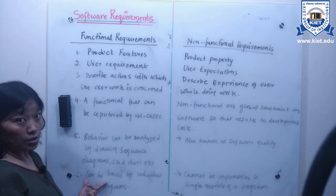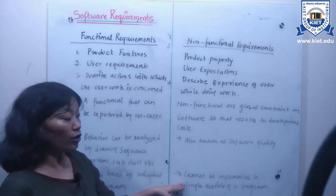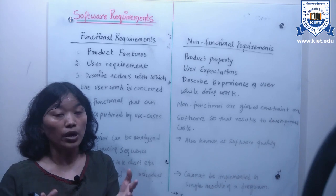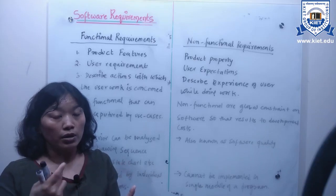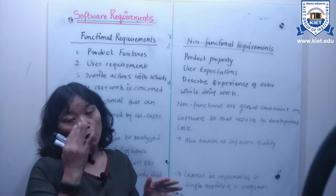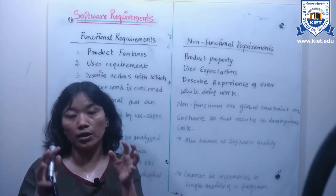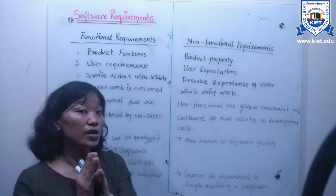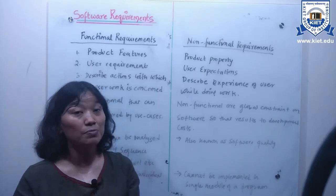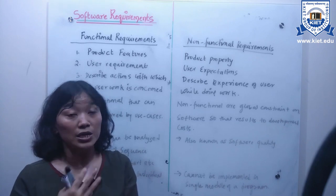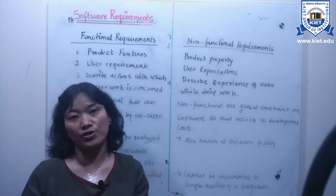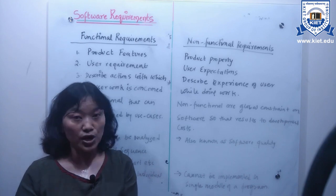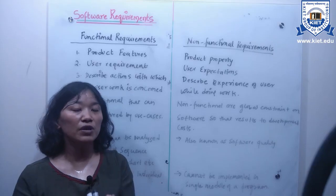Functional requirements can be easily traced by an individual set of programs or a single component or module to check whether it works properly. Non-functional requirements, however, cannot be implemented or traced in a single module because we need to check the quality of the module as well as the integration of that module with other modules and the entire software system. Non-functional requirements are comparatively more critical than functional requirements, because when non-functional requirements don't meet user expectations, the entire software system becomes useless. I hope you understand today's lecture on software requirements and its two broad categories — functional and non-functional requirements — along with the differences between them.